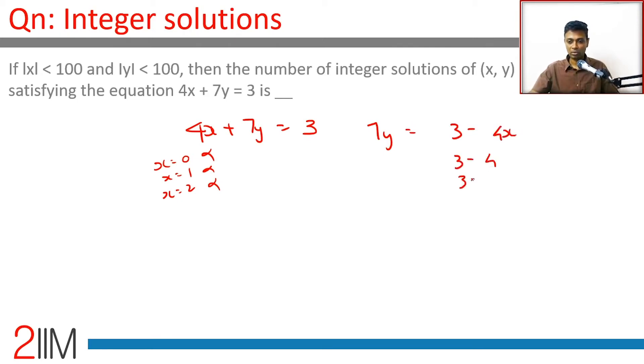3 minus 4, 3 minus 8, 3 minus 12 does not work. 3 minus 16 is minus 13, does not work. 3 minus 20 is minus 17, does not work. 3 minus 24 is minus 21 - y could be minus 3, brilliant! So x equal to 6, y equal to minus 3.